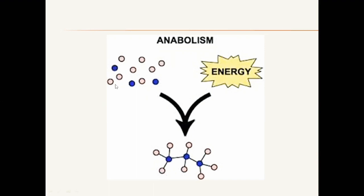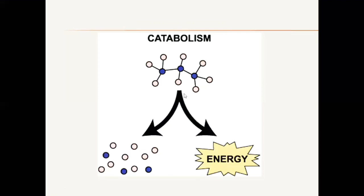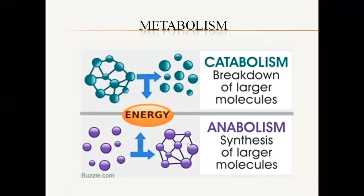In anabolism, you have small molecules that, in the presence of energy, combine to form a large complex molecule. In catabolism, a large molecule breaks down, and as a result energy is released — in the form of ATP. Catabolism is the breakdown of large molecules into smaller components, and anabolism is the formation of large complex molecules. Collectively, anabolism and catabolism together are called metabolism.